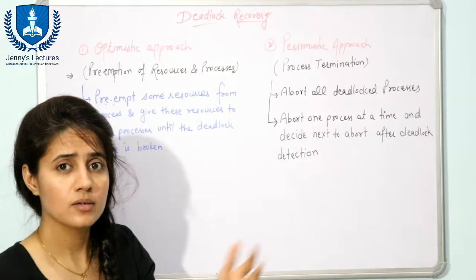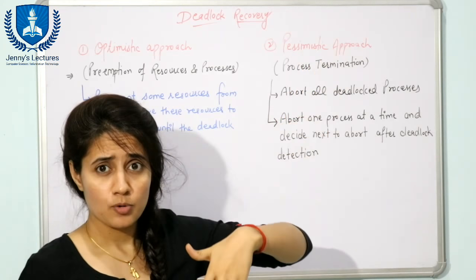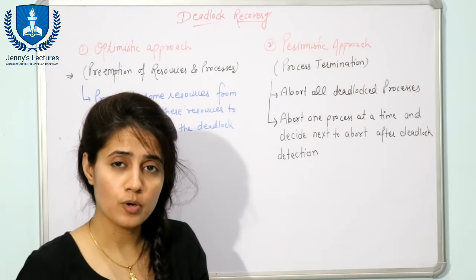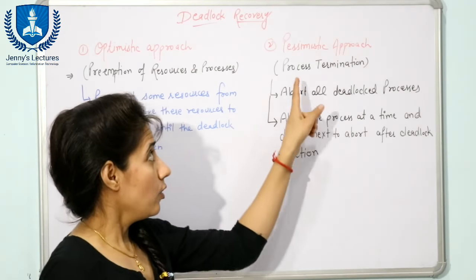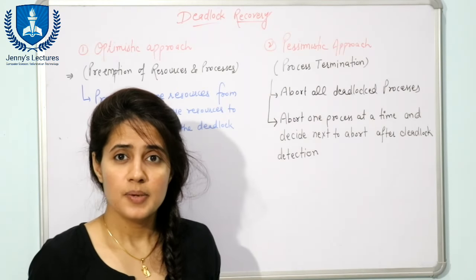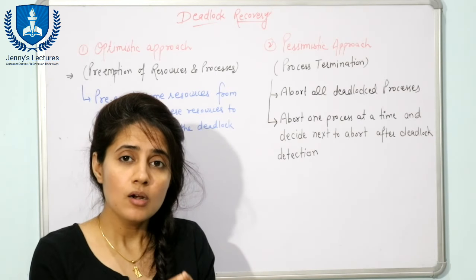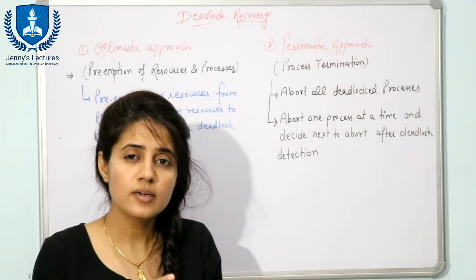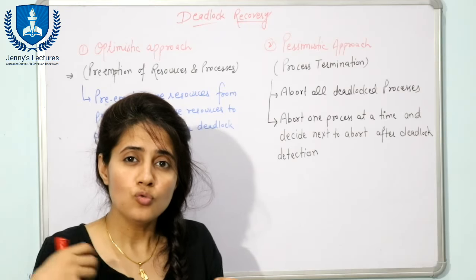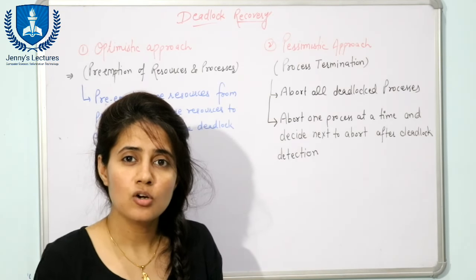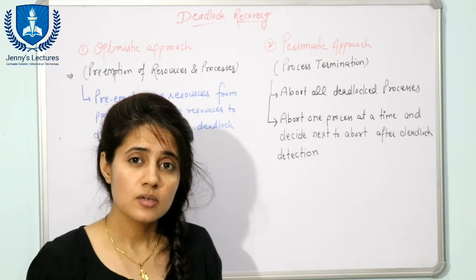There are two approaches to deadlock recovery. The first is the pessimistic approach, which involves preemption of resources and processes. The second is process termination, or killing of processes. In process termination, the first method is to kill all processes that are in a deadlocked state. Sometimes there may be two, three, five, or even ten processes forming a cycle in deadlock.